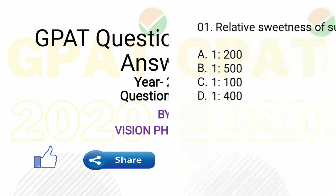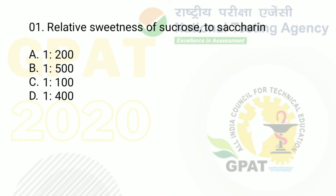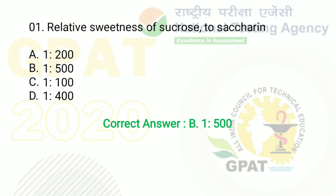The first question was: relative sweetness of sucrose to saccharin is. The options were A: 1 is to 20, B: 1 is to 500, C: 1 is to 100, and D: 1 is to 400. The right answer is option B, that is 1 is to 500. Moving to the next question.